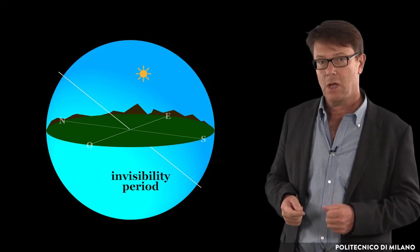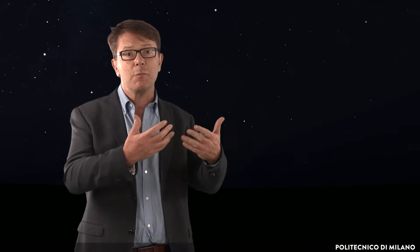Stars consequently have an invisibility period. This period ends with the so-called heliacal rising. On this day, the star is visible for a few moments, low on the eastern horizon, while the Sun is still under the horizon.